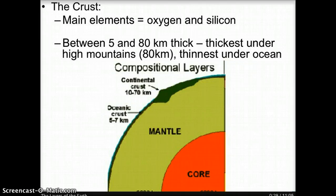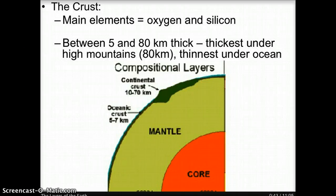The crust is the outermost layer — the layer that you live on. It is a layer of solid rock that includes both dry land and the ocean floor. The main elements in the crust are oxygen and silicon. The crust is the thinnest layer, extending from 5 kilometers thick to 80 kilometers thick. It is thickest at mountains and thinnest on the ocean floor.